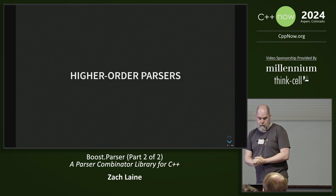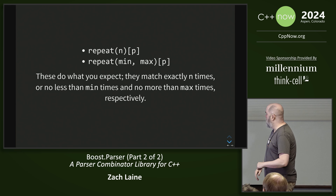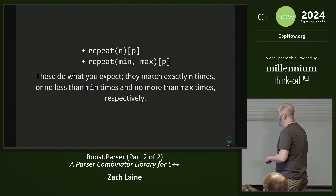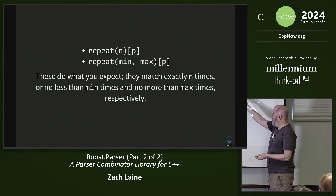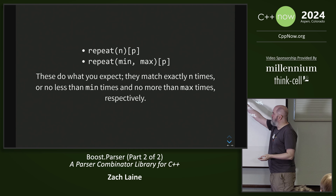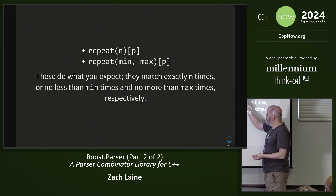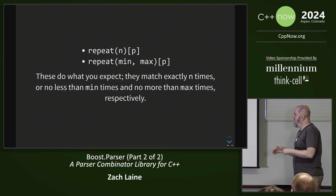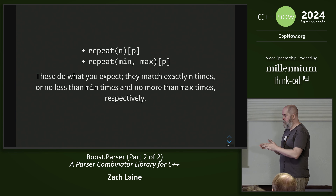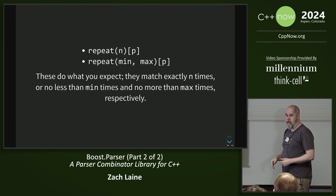So let's talk about higher-order parsers — there are only a few of these. The simplest one is repeat. This is basically the Kleene star, but constrained to exactly n. repeat(min, max) is similar, except you have min and max: it has to match at least min times but no more than max, so it can match somewhere in the middle.